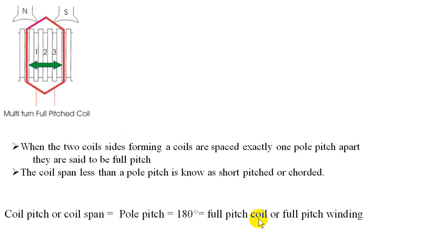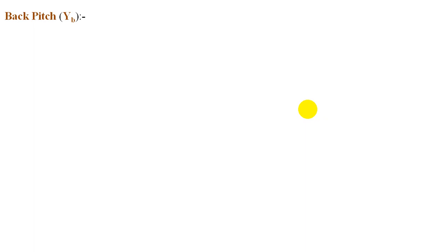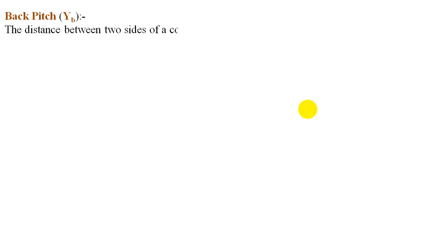Coil pitch denotes the number of slots the coil will cover — in this case it is two slots on inserting into the slots. A multi-turn coil of short pitch is reduced by one slot. Now let us see some more definitions. What is back pitch? Back pitch is defined as the distance between two sides of a coil measured in terms of conductors at the back end of the commutator. Without the diagram, we cannot fully understand back pitch and other definitions, which must be understood based on either lap or wave.